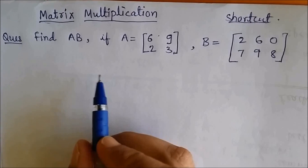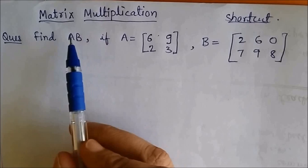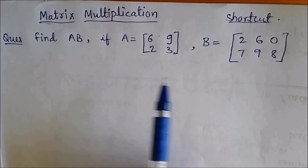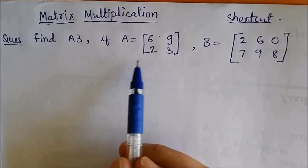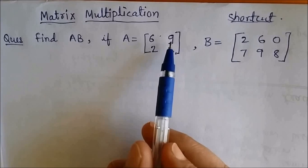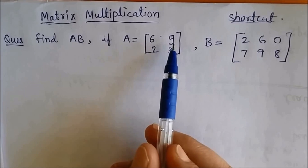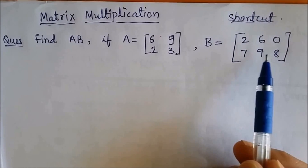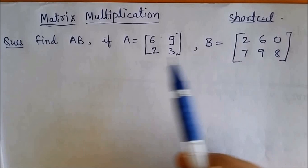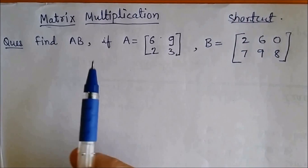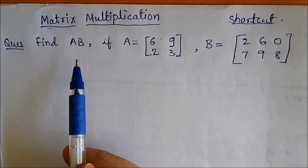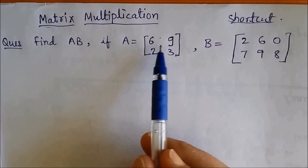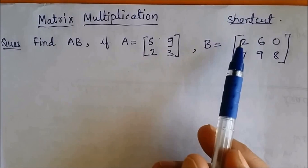Hello friends. In this video we will learn how to find matrix multiplication quickly using shortcuts. Here you can see that matrix A has two columns, which is equal to the number of rows of matrix B. Hence AB is defined. For getting the elements of the product matrix, we take the rows of A and columns of B.